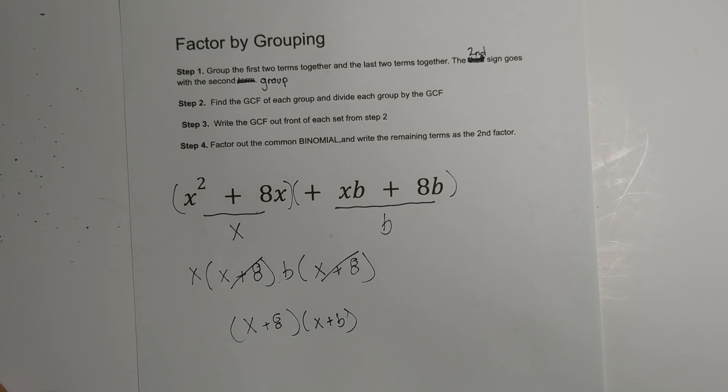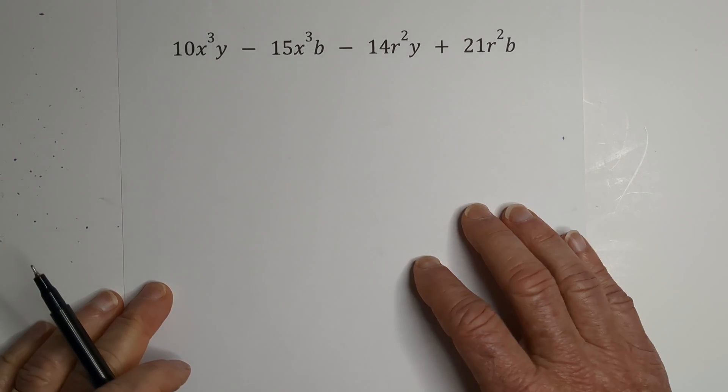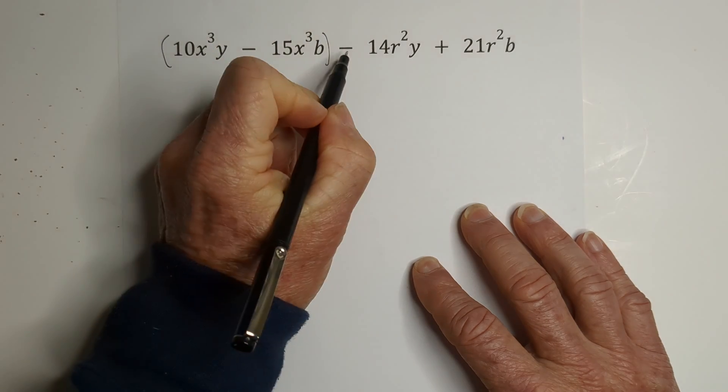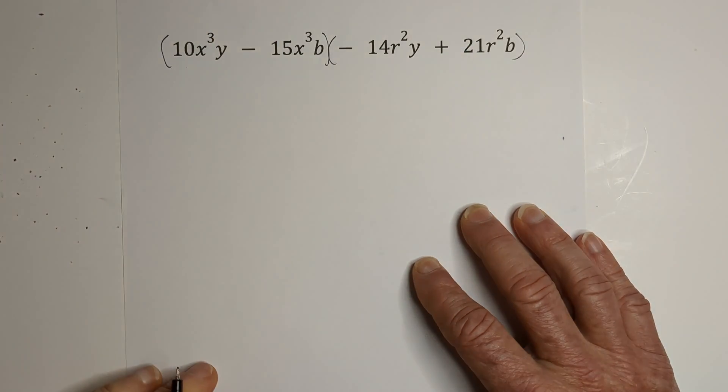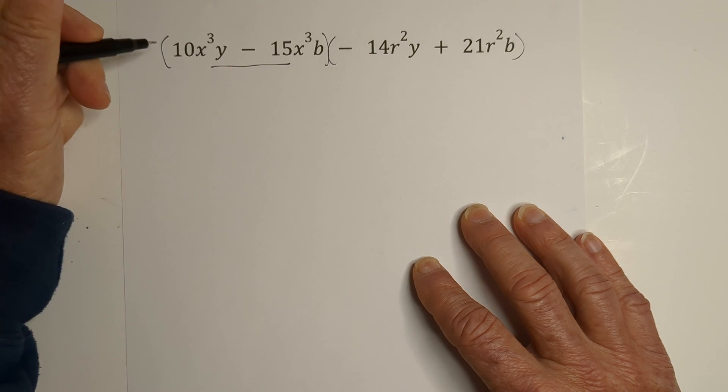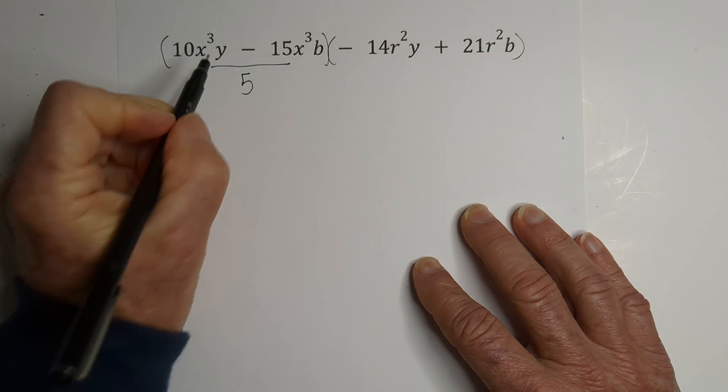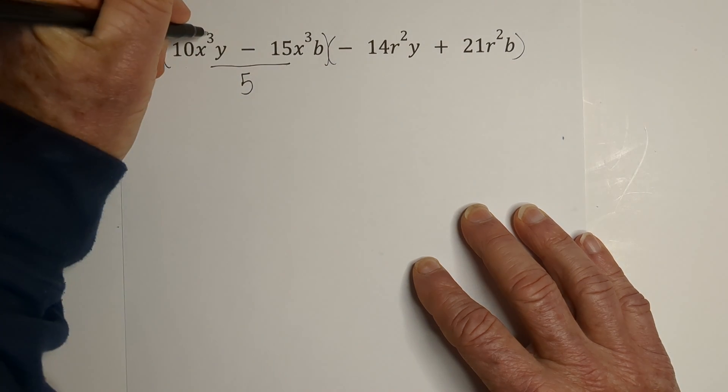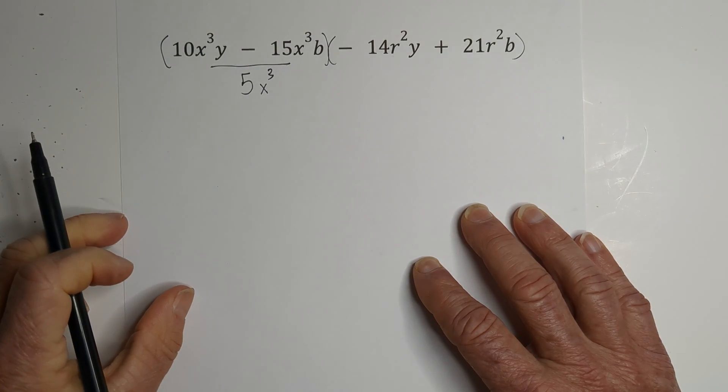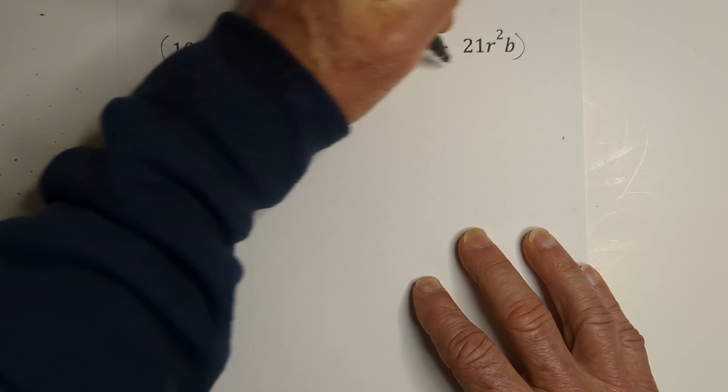Let's work another example. With this example, we have all kinds of things going on. So let's get started. Let's group. And remember, second sign goes with the second group. Now we need to find the GCF of both of these. We have two constants. The GCF of 10 and 15 is 5. X's are common, and they're both cubed. Remember if they're not cubed, you go with the lowest exponent. And that looks like that's the GCF of this group.